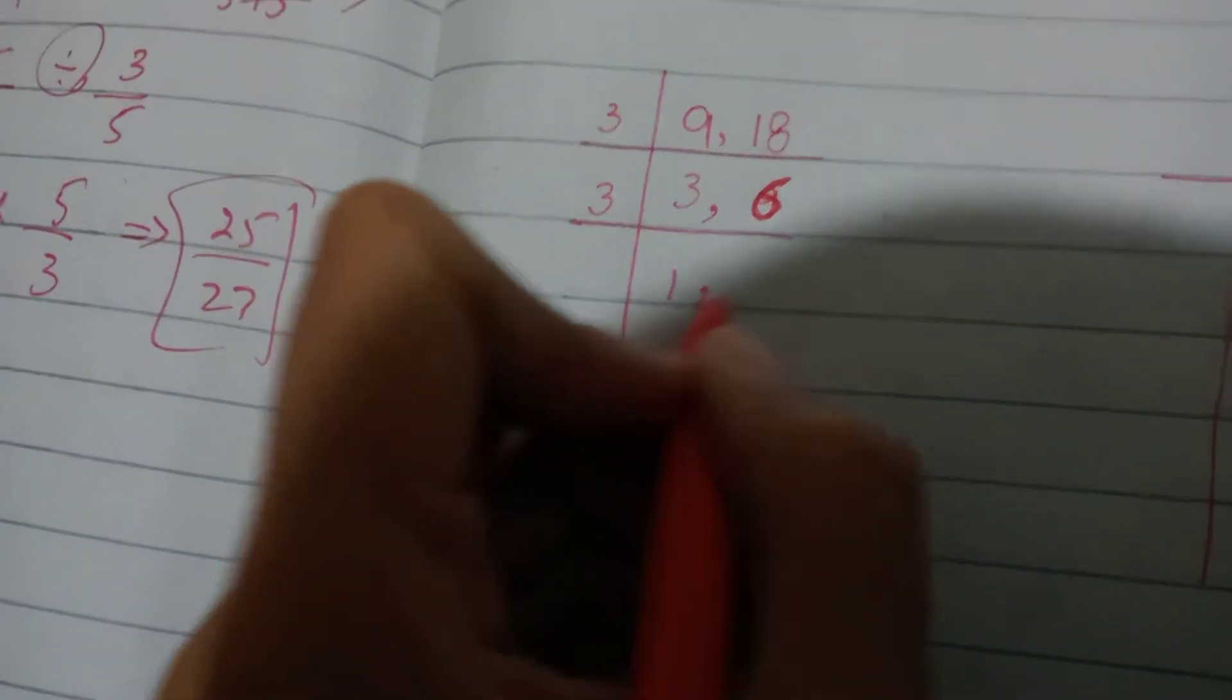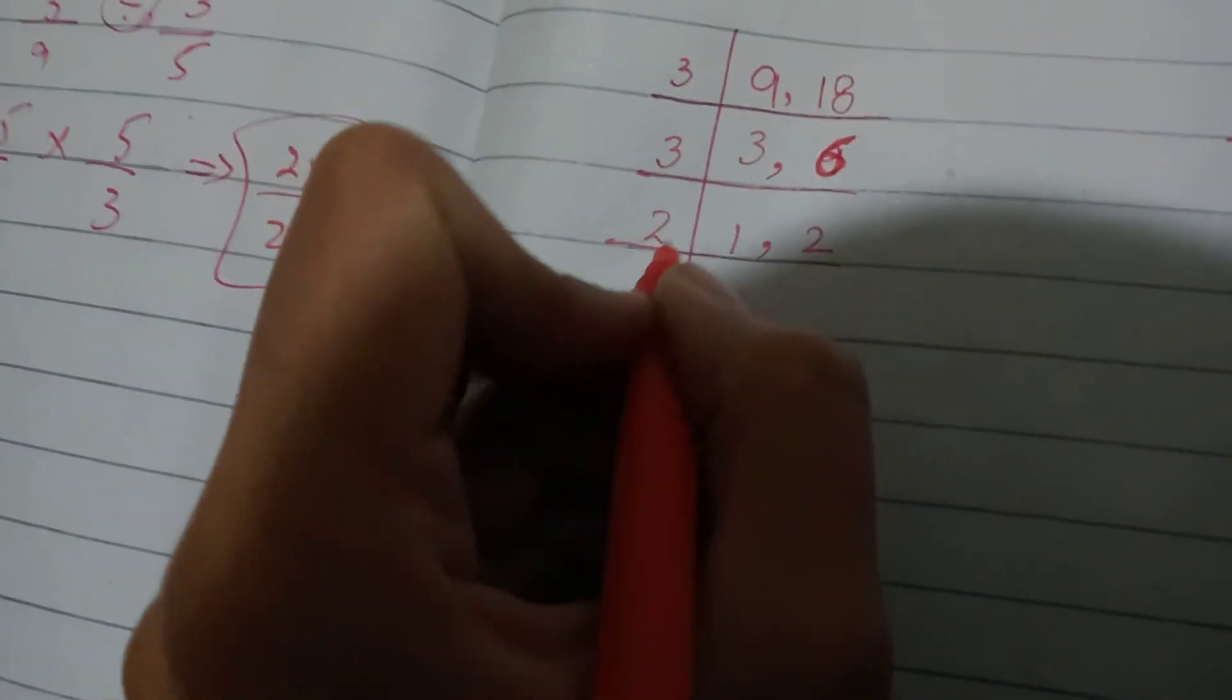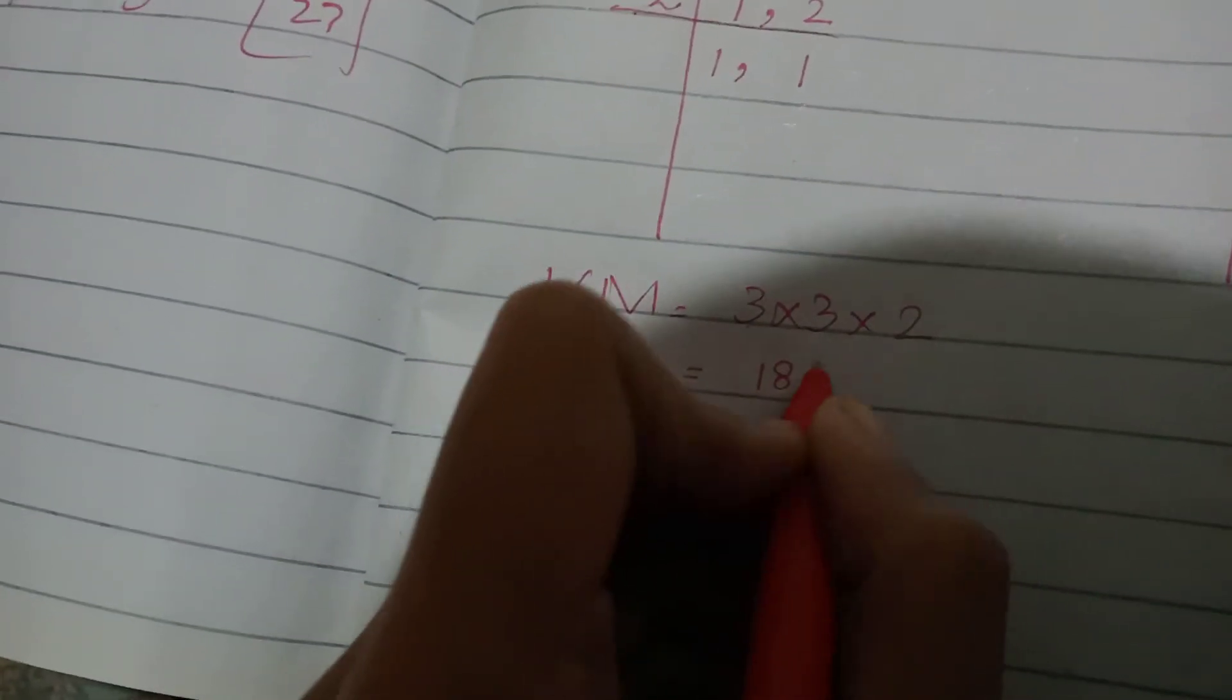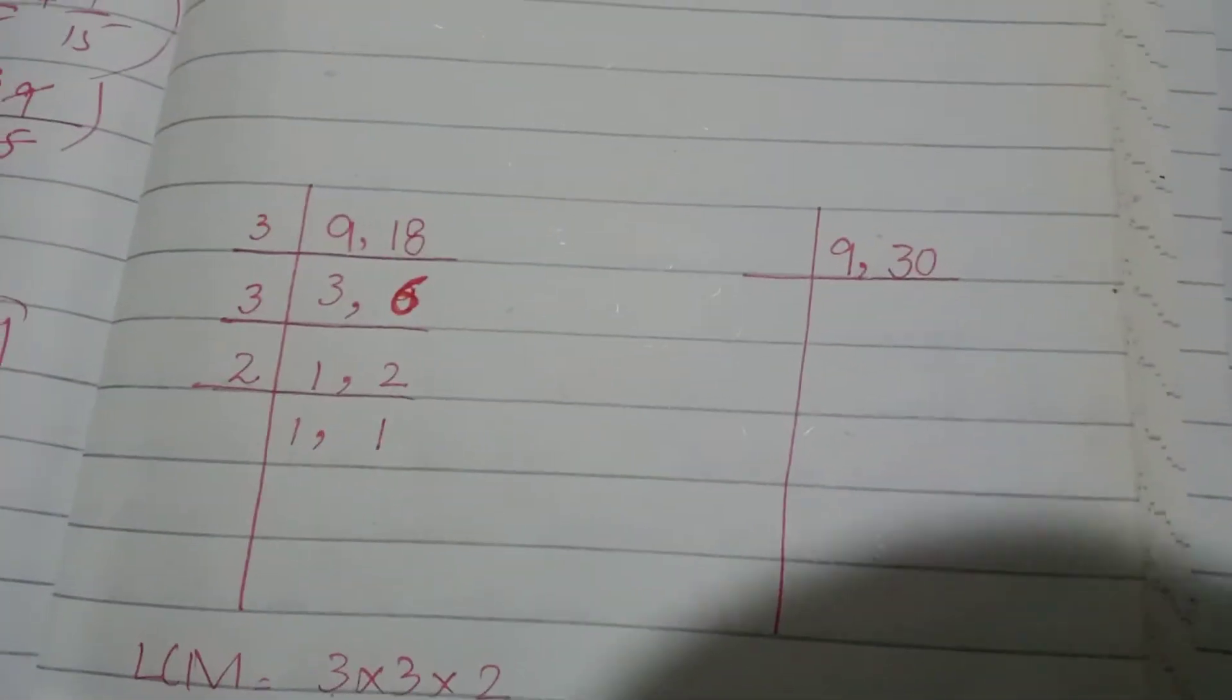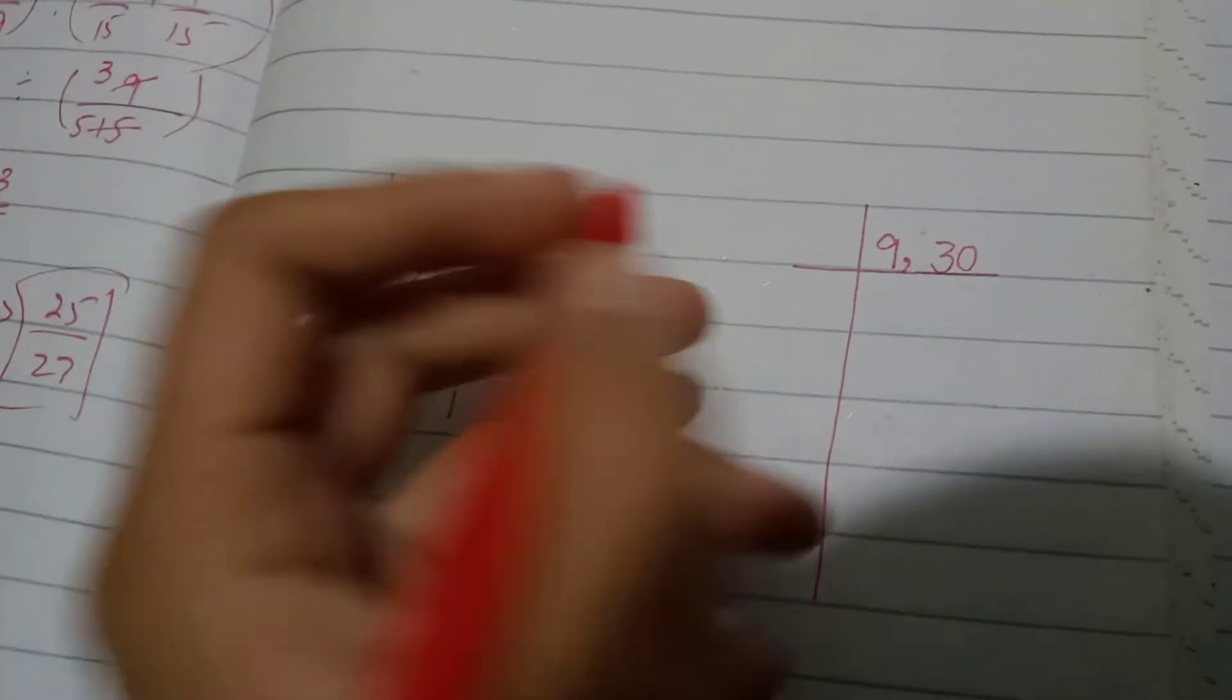3 goes into 3 once, and 3 into 6 is 2. We multiply: 3 times 3 is 9, and 9 times 2 is 18. So the answer is 18. Coming towards the next one, LCM of 9 and 30.